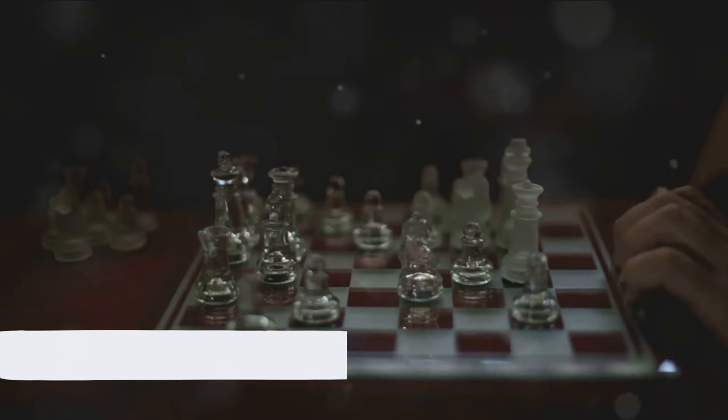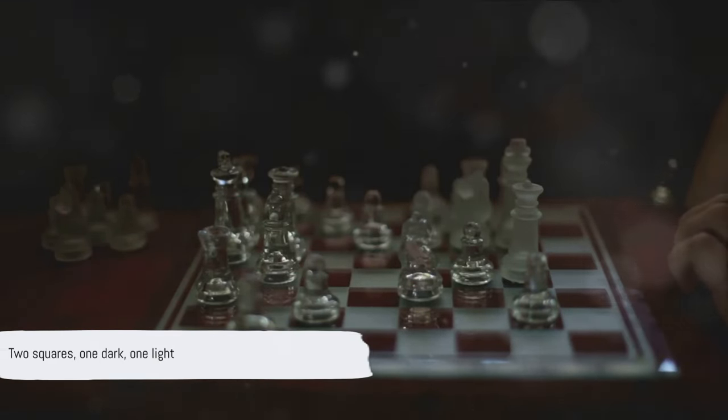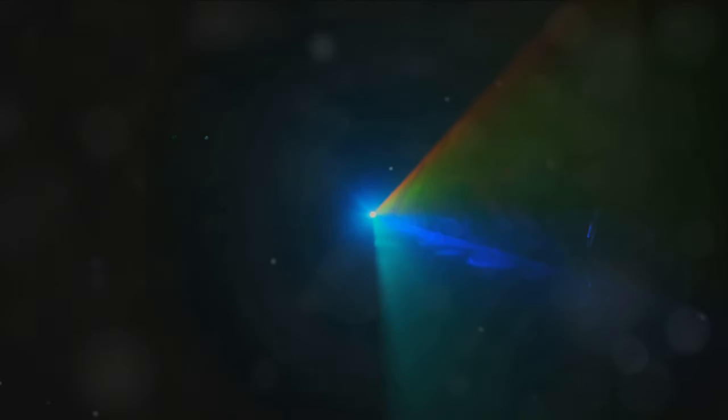You see two squares, right? One dark, one light. But here's the catch. They're actually the same color. It's just those sneaky shadows playing tricks on your eyes. The surrounding context creates an illusion, convincing us that the two identical colors are different.